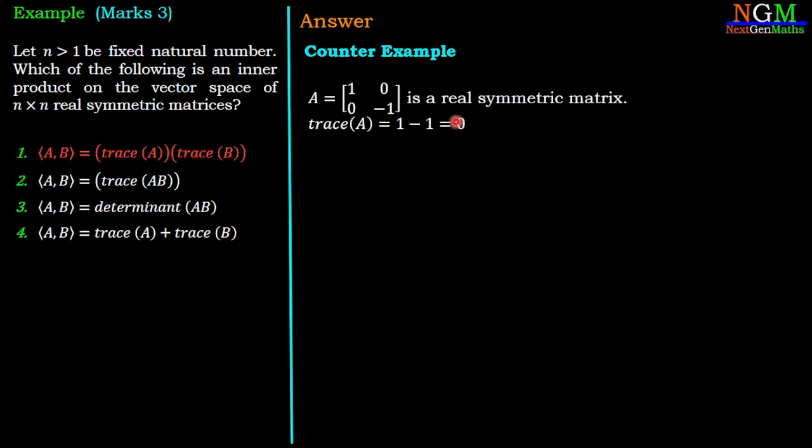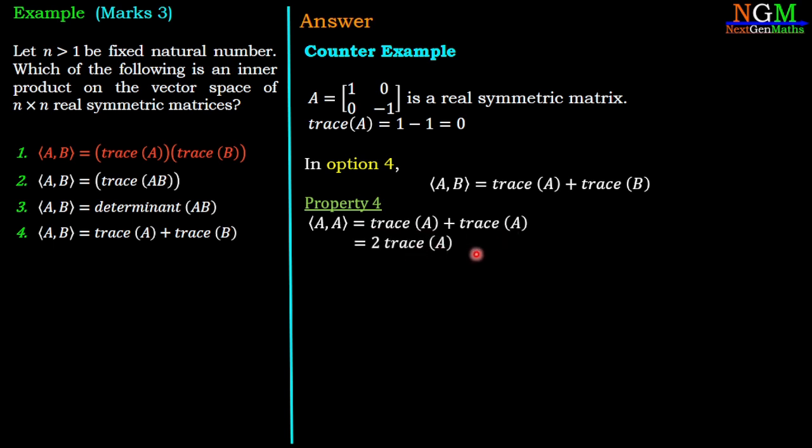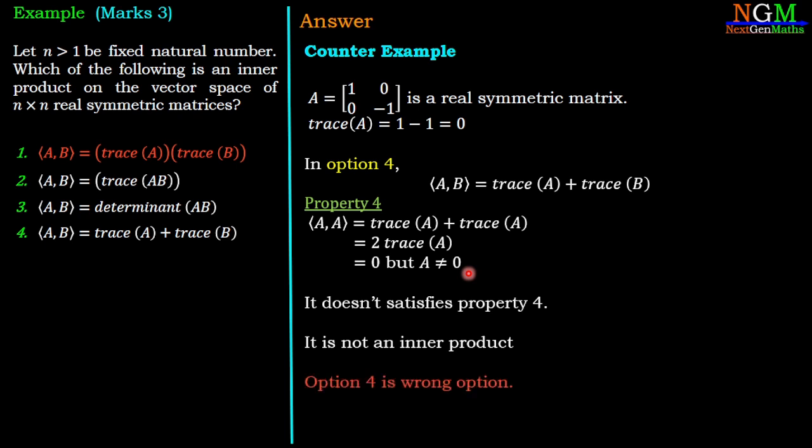Now, with the same counter example, we are going to check the fourth option. By property 4, ⟨A,A⟩ = trace(A) + trace(A) = 2 trace(A). But trace(A) is 0, therefore ⟨A,A⟩ = 0, but A is non-zero. So it does not satisfy the fourth property. Hence, option 4 does not give an inner product and option 4 is the wrong answer.